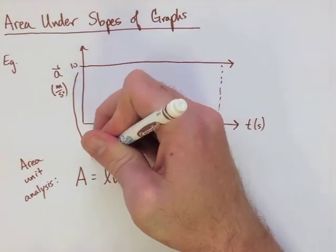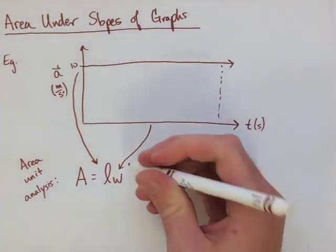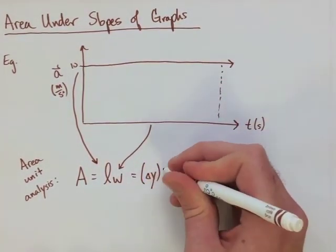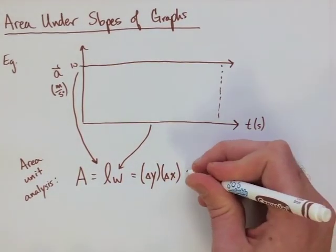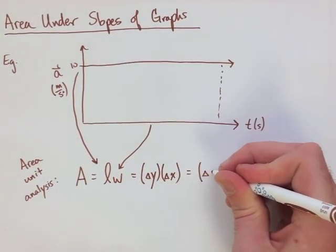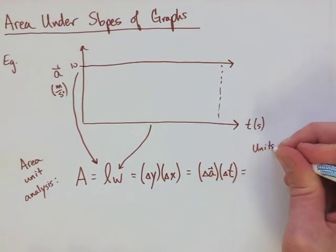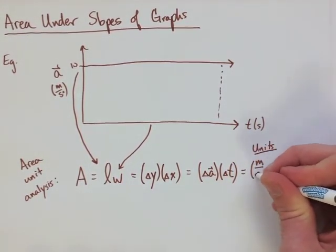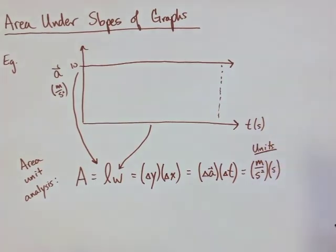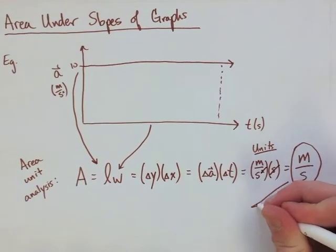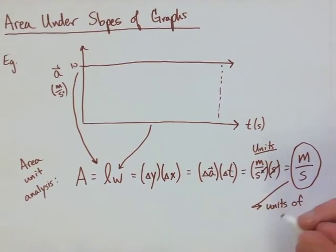We know that area of a box is length times width, and in this case, our y is our length and our x is our width. When we put in our values, we have the difference in our acceleration times the difference in our time. If we look at the units for these two things, when we have acceleration times time, we actually cancel out our meters per second squared, and it just becomes meters per second. These, of course, are the units for velocity.